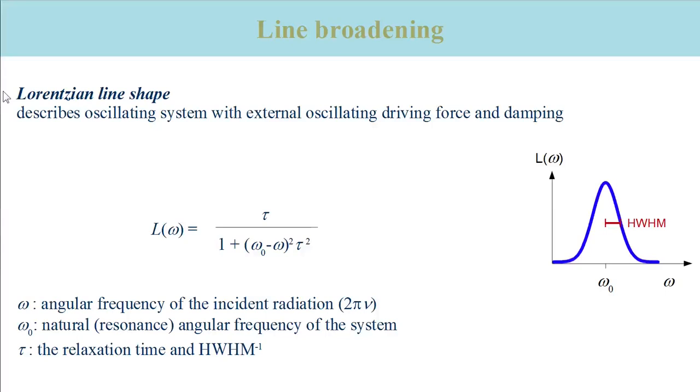For example, the induced movement of electrons in molecules which gives rise to electronic transitions and the induced movement of nuclei giving rise to vibrational transitions. The Lorentzian line shape is given by this equation.